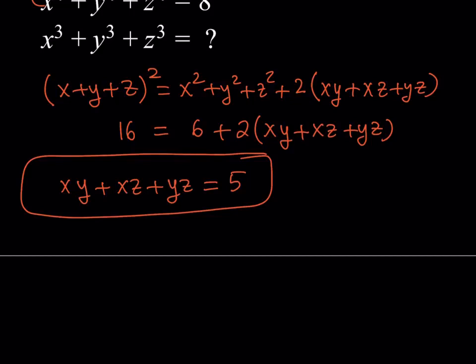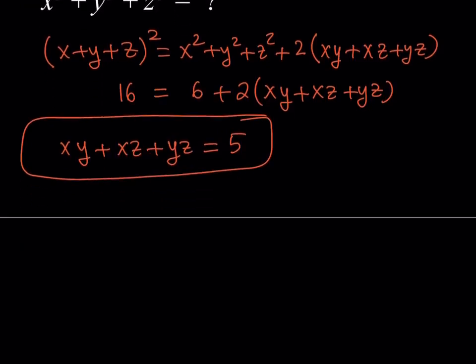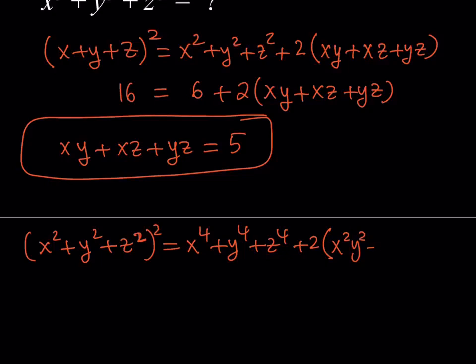Now, notice that we also have x to the fourth plus y to the fourth plus z to the fourth. So that tells me to square this expression here. What happens if I do? If you square this, it's going to be just similar to the other one, but you're just going to square everything. So it's going to be like x to the fourth plus y to the fourth plus z to the fourth plus two times x squared y squared plus x squared z squared plus y squared z squared.